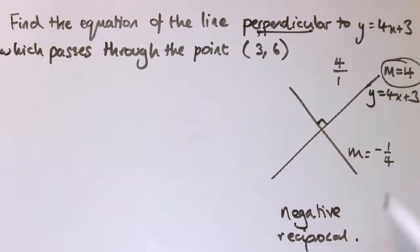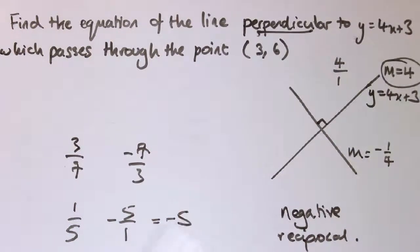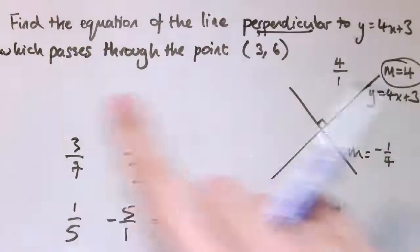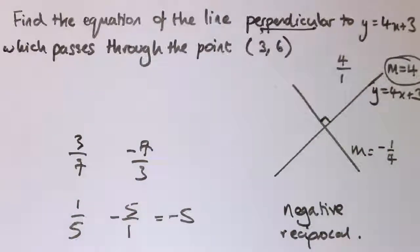If my original gradient had been 3/7, the negative reciprocal would be minus 7/3. If it had been 1/5, it would have been minus 5 over 1, which is just minus 5. So that's what we're doing: we're taking the negative reciprocal if we want the gradient of the perpendicular line.